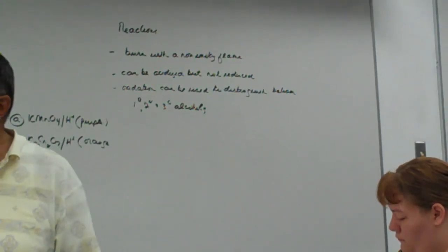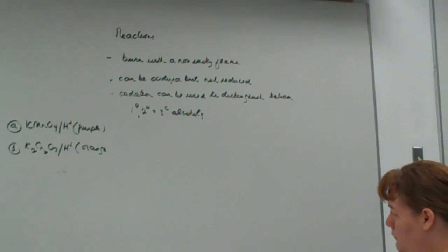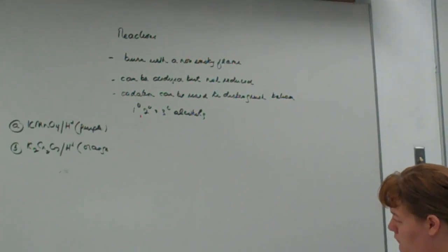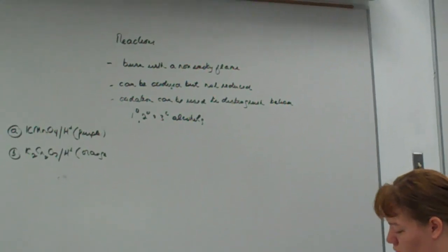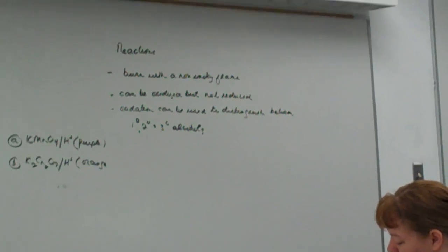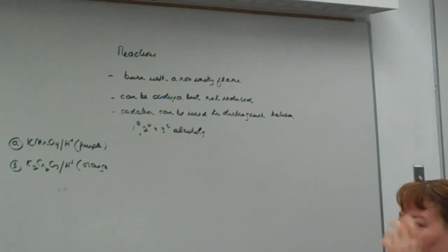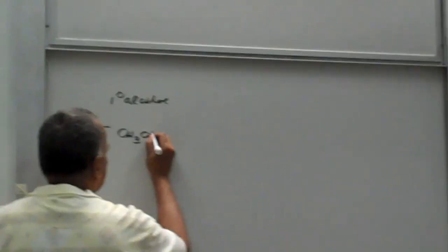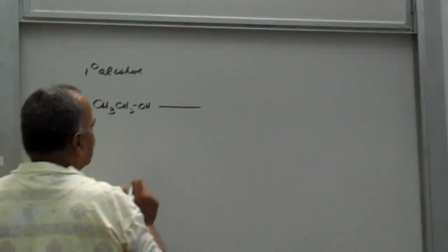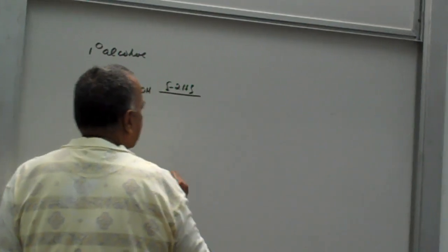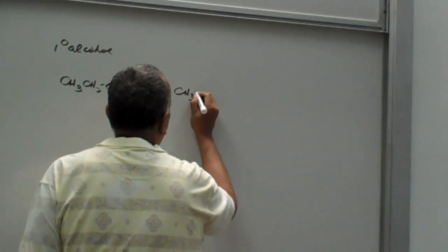When we add these reagents to the three types of alcohols, we get different products. Let's start with a primary alcohol. Let's say we start with ethanol. If I oxidize it mildly, I lose two hydrogens and form a compound called an aldehyde.